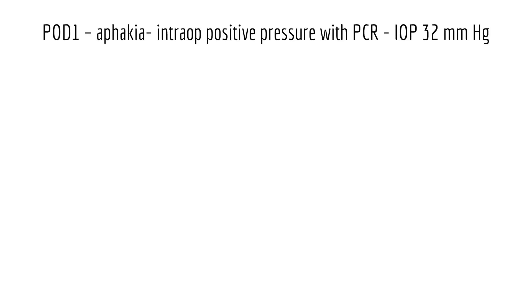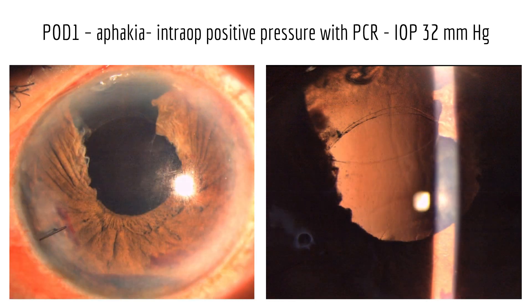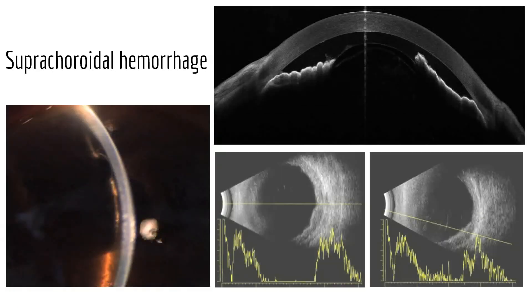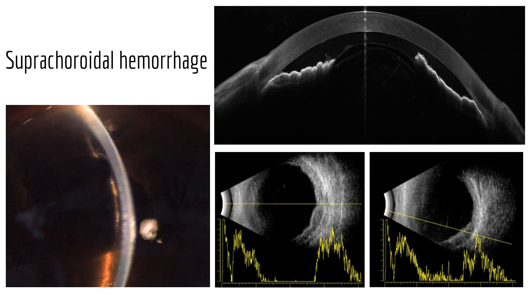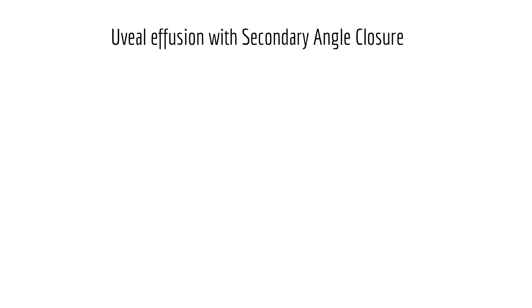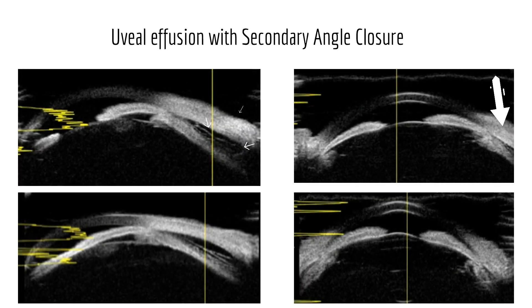This is a POD1 picture of a patient who had severe positive pressure with pain on the table, and IOL implantation was deferred. Slit lamp examination showed a uniformly shallow AC with vitreous prolapse through the posterior capsule rupture. B-scan showed a localized aborted suprachoroidal hemorrhage. Secondary angle closure can also be precipitated by uveal effusion.